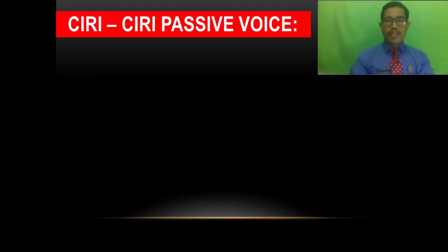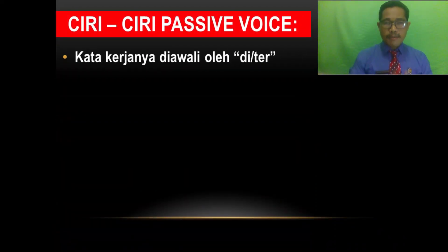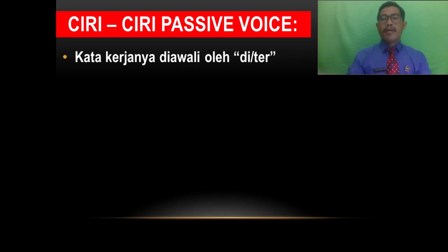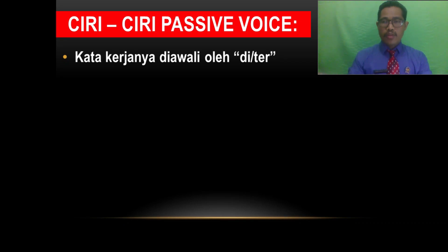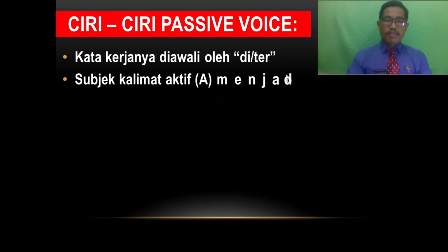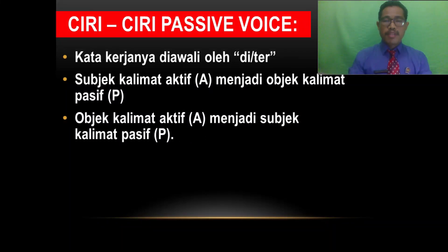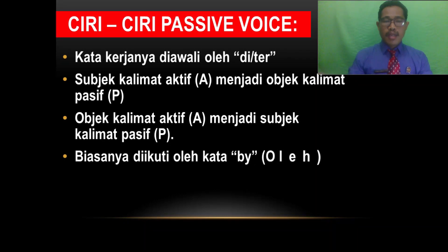Ciri-ciri dari passive voice: pertama, kata kerja diawali oleh kata 'di' atau 'ter'. Misalnya, kalau aktifnya 'mencuci', maka pasifnya 'dicuci'. Kalau 'memakan', dipasifkan jadi 'dimakan' atau 'termakan'. Subjek kalimat aktif menjadi objek kalimat pasif. Objek kalimat aktif menjadi subjek kalimat pasif. Biasanya diikuti oleh kata 'by' (oleh), tapi tidak selalu.